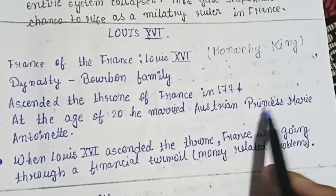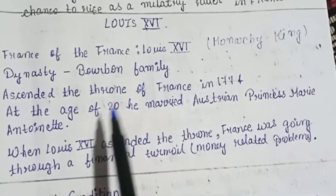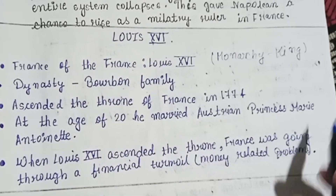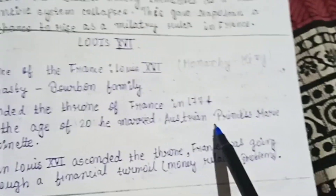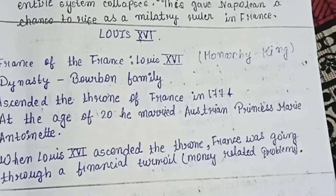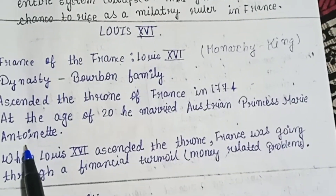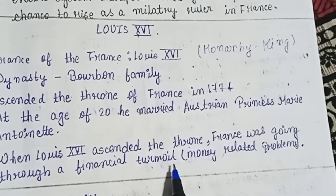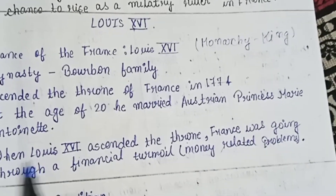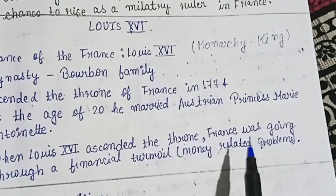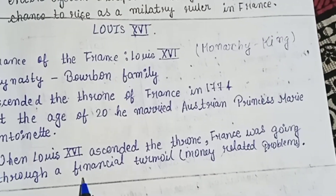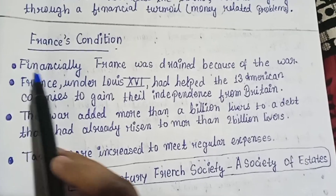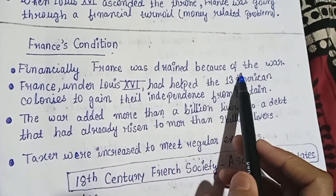At the age of 20, Louis XVI ascended the throne and married Austrian princess Marie Antoinette. After Louis XVI became king, France was going through a financial turmoil — money-related problems. The financial condition of France: number one, France was financially drained because of war.